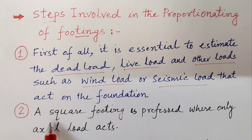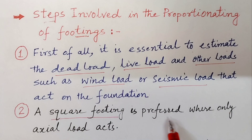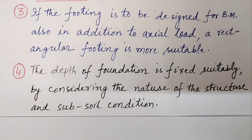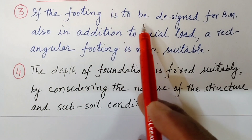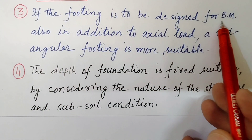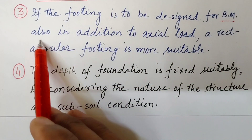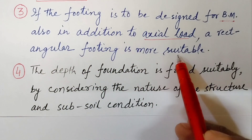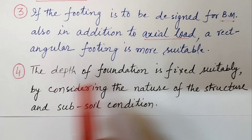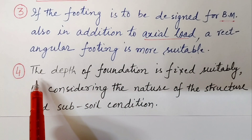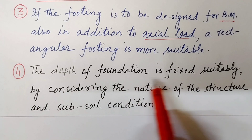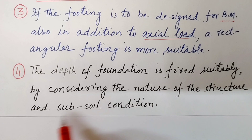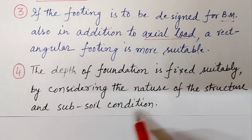A square footing is preferred when only axial load acts. If the footing is to be designed for bending moment in addition to axial load, a rectangular footing is more suitable. After that, the depth of foundation is fixed suitably by considering the nature of the structure and sub-soil conditions as revealed by the borehole test data.